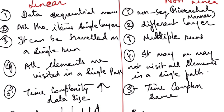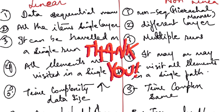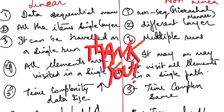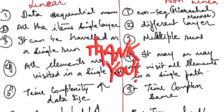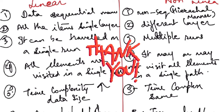The examples of linear data structures are arrays, stacks, and queues, while tree and graph are examples of non-linear data structures. Thank you so much — I hope you liked this. We will discuss more data structures in the coming classes, so stay tuned.